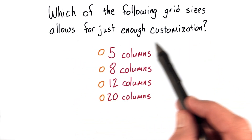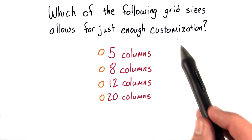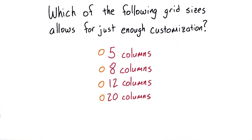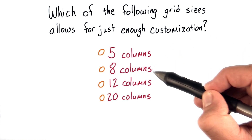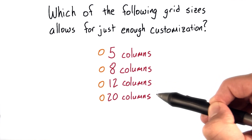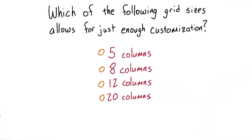Which of the following grid sizes is going to allow for just enough customization? Meaning we'll be able to get those common two, three, and four column wide screens and have enough flexibility to do them however we want, without adding overhead of columns we're never going to use. Do you think five columns is enough, eight columns, 12 columns? Or do you think we need 20 columns to get the customization we need?